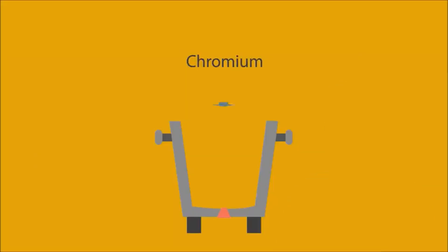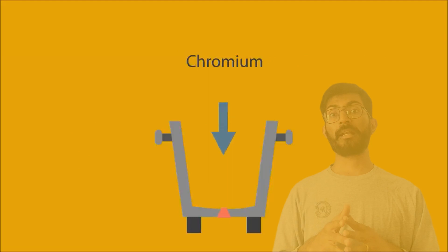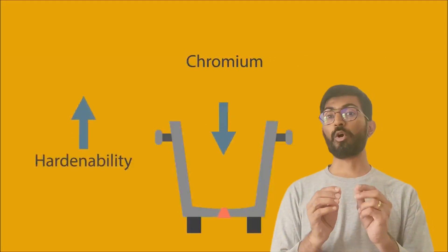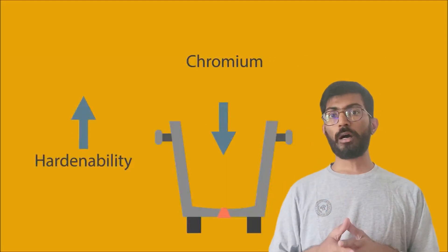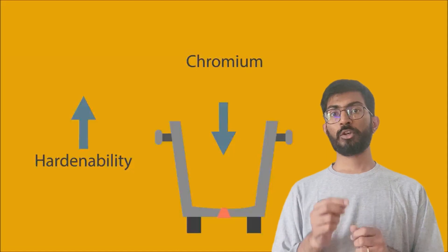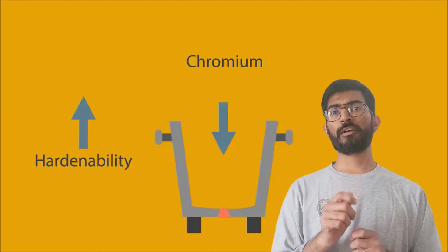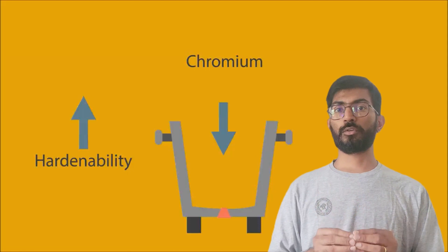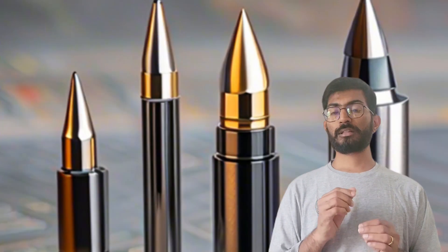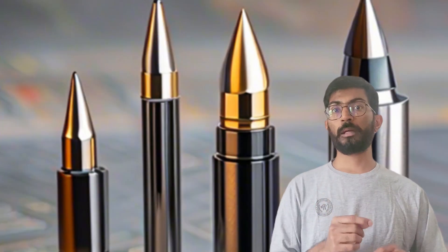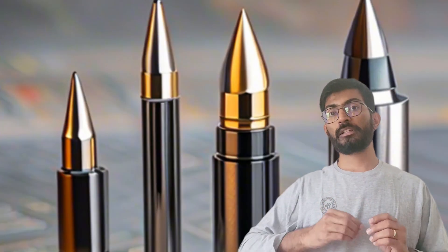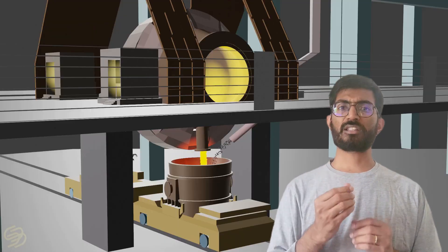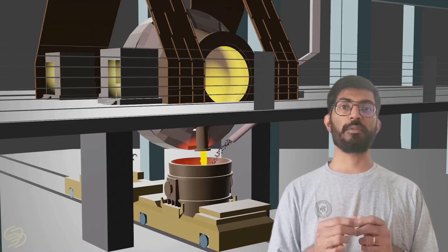Chromium carbide is really hard and increases the toughness and hardness of the outer surface. So if you go out to the shop and buy any tooling, you will see different kinds of tips on those tools. The main reason for that is they are added with some chromium to increase the hardness of the surface so it can sustain wear and abrasion.